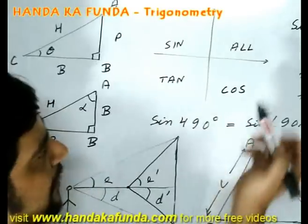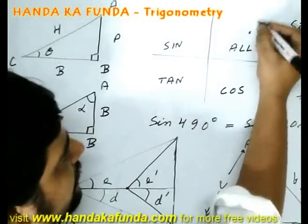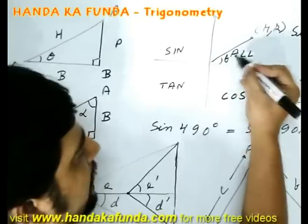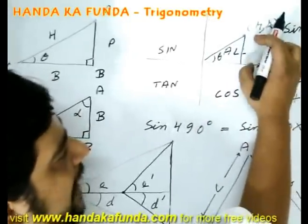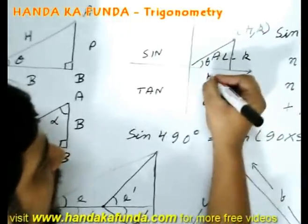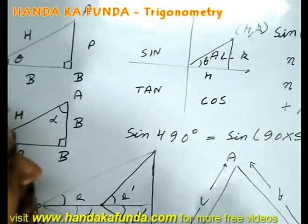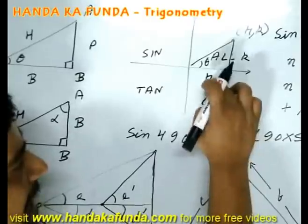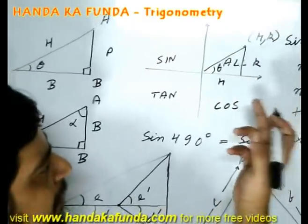Why is it so? Say you pick up a random point h, k. Then for this particular point the angle made is theta. So for tan the height is k here and the base is h. So sin will be k by the hypotenuse, both of them are positive. Cos will be h by the hypotenuse, both of them are positive.